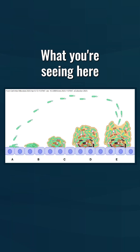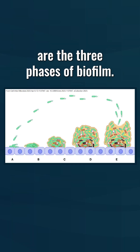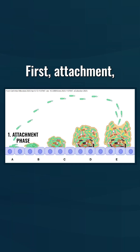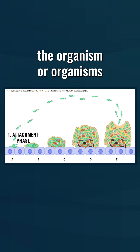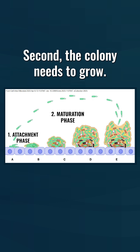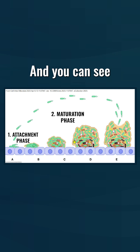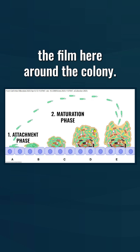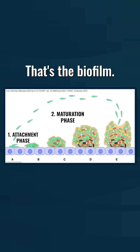What you're seeing here are the three phases of biofilm. First, attachment — the organism or organisms need to attach, anchor somewhere. Second, the colony needs to grow, and you can see the film here around the colony. That's the biofilm.